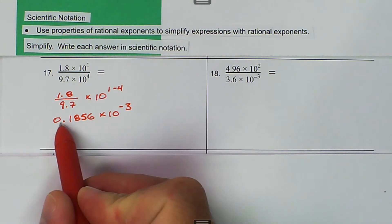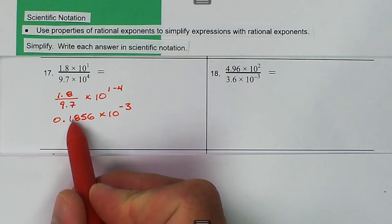Now we want to move the decimal because it's not in scientific notation yet - we want our lead number to be in the ones place. So we have to move the decimal one place back.